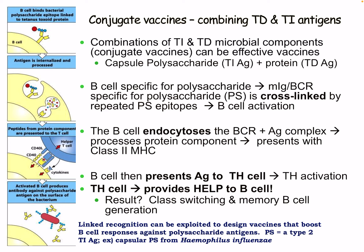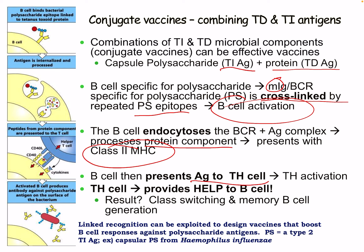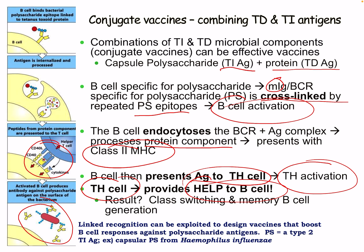Conjugate vaccines combine thymus-dependent and thymus-independent antigens. The capsular polysaccharide is the thymus-independent component, and the protein is the T cell-dependent component. B cells specific for the polysaccharide are activated via cross-linking of membrane immunoglobulin B cell receptors by the repeated polysaccharide epitopes. The B cell endocytoses the receptor-antigen complex, processes the protein component, and presents it on MHC class II to the T helper cell. T helper cell activation then provides help back to the B cell, resulting in class switching and memory B cell generation, giving long-lasting effective immunity.